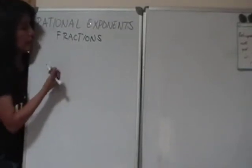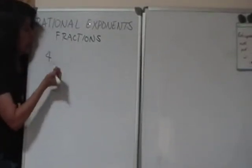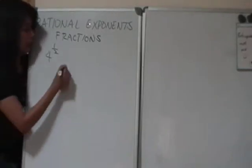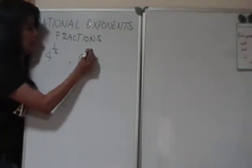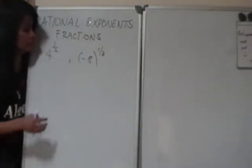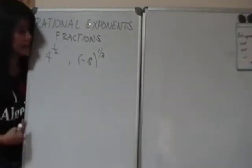For instance, today I'm going to show you how to simplify expressions like 4 to the 1/2, let's say negative 8 to the 1/3. How do we simplify these types of expressions?